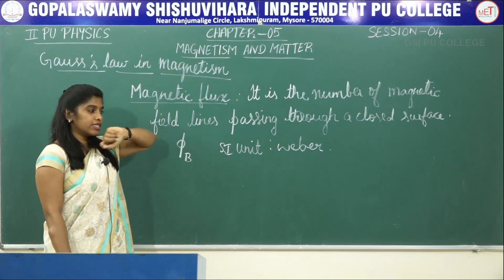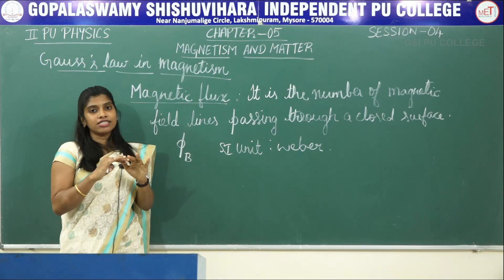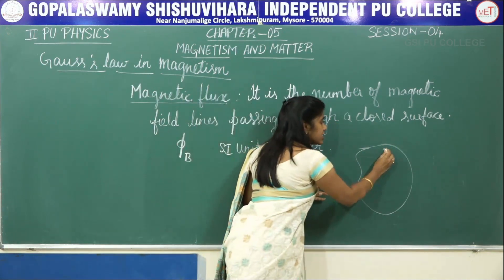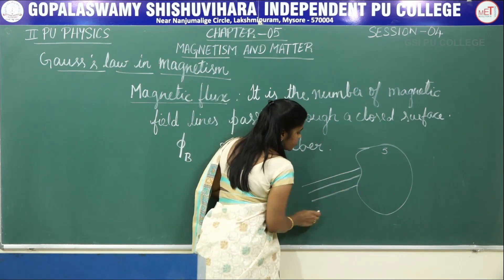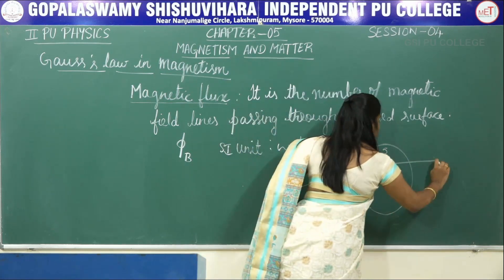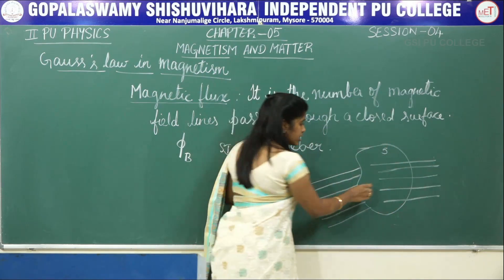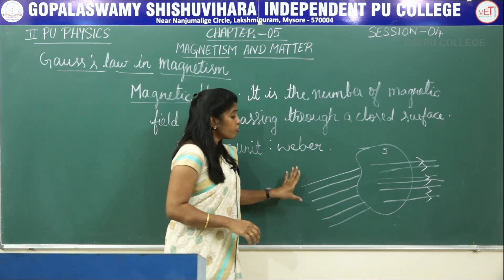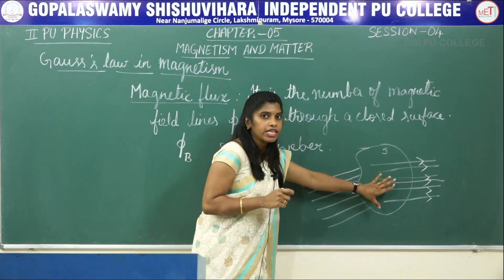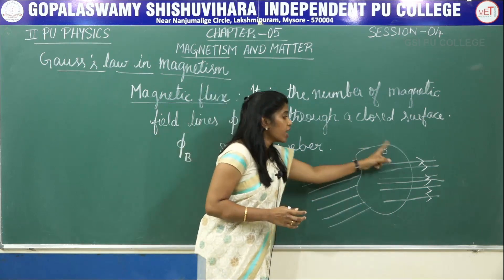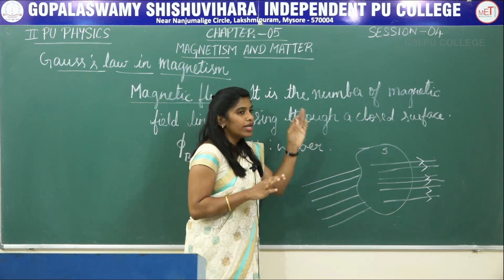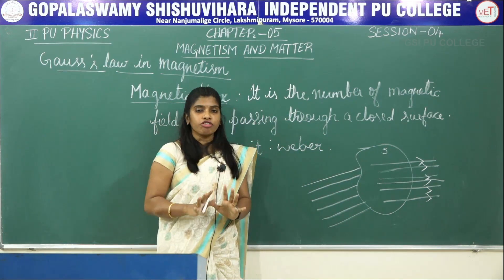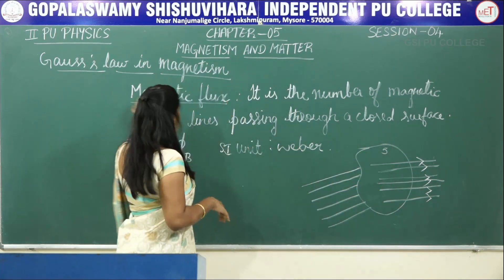So what does Gauss law in magnetism state? The Gauss law states that the magnetic flux inside the closed bound surface is always equal to 0. If this is the closed bound surface, then the number of magnetic field lines entering this bound surface will be equal to the number of field lines coming out. So the net magnetic flux inside this bound surface is 0.